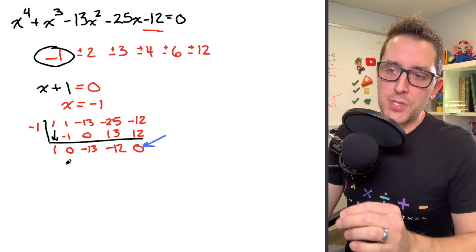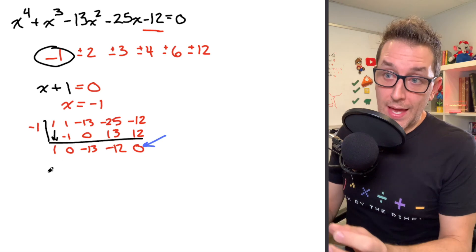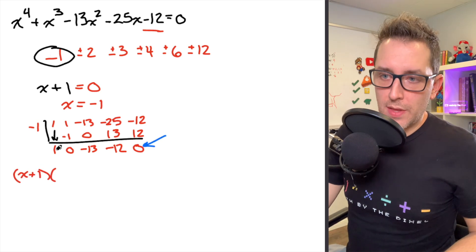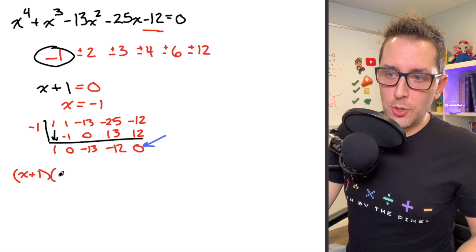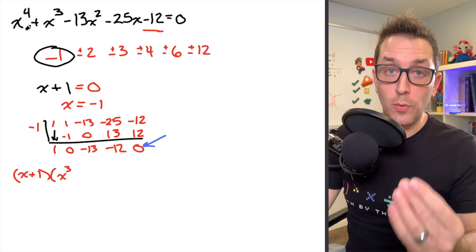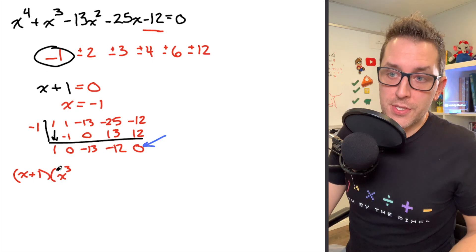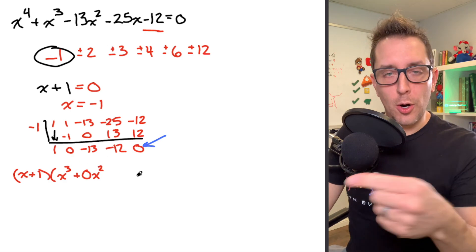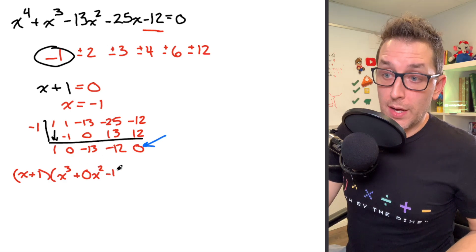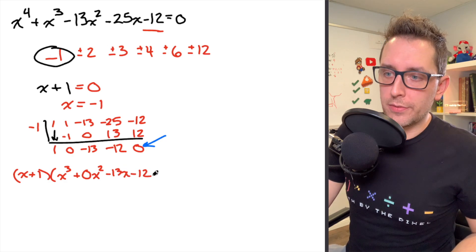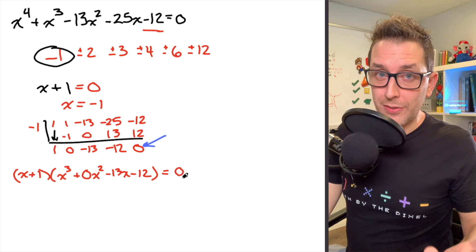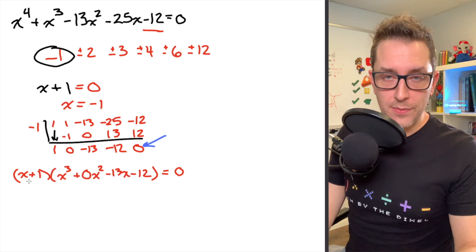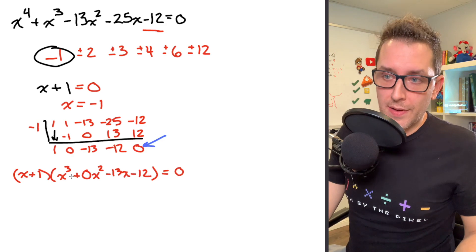When we perform synthetic division, the numbers we get as a result become the coefficients of a new polynomial with the x plus 1 factor removed. We have the x plus 1 factor, and then a new expression with a coefficient of 1 in front of an x cubed term — we removed one degree from our degree 4 polynomial. The next term has a coefficient of 0 for x squared, then negative 13 on the x term, and negative 12 as the constant. Setting that equal to 0, we've reduced the power by 1, but we're still working with a cubic.